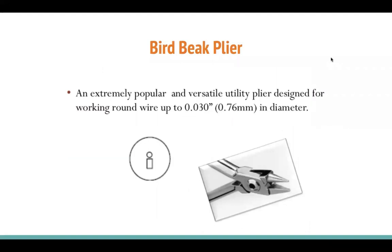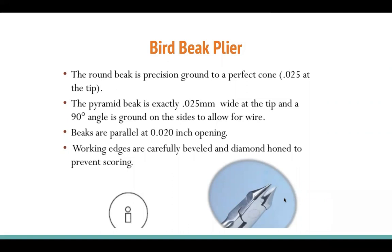The bird beak plier is an extremely popular and versatile plier designed for working round wire up to 0.03 inches in diameter. Many loops used in the clinic are made with the bird beak plier. The working edges are carefully beveled and the diamond horn prevents scoring. One side is cone-shaped and the other side is flat like an Adams plier beak. Look for serration on this plier for better grip.